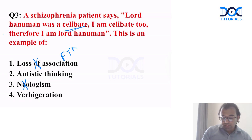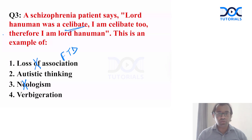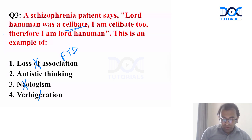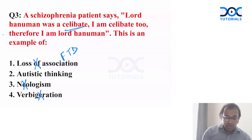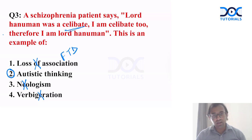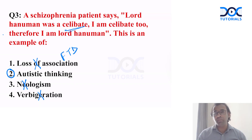Option four, verbigeration, means unnecessary repetition of the same word or phrase within normal speech. We can easily rule out all these options. Option number two is correct — autistic type of thinking. There can be fantasy-type thinking.